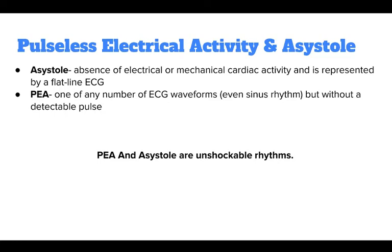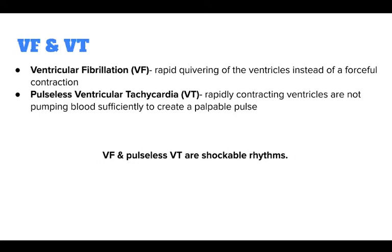Asystole may be preceded by an agonal rhythm. An agonal rhythm is a waveform that is roughly similar to a normal waveform, but occurs intermittently, slowly, and without a pulse. Ventricular fibrillation or VF and pulseless ventricular tachycardia or VT are life-threatening cardiac rhythms that result in ineffective ventricular contractions. VF is a rapid quivering of the ventricles instead of a forceful contraction, and the ventricular motion is not synchronized with atrial contractions. Pulseless VT occurs when the rapidly contracting ventricles are not pumping blood sufficiently to create a palpable pulse. In both VF and pulseless VT, persons are not receiving adequate perfusion. VF and pulseless VT are shockable rhythms.